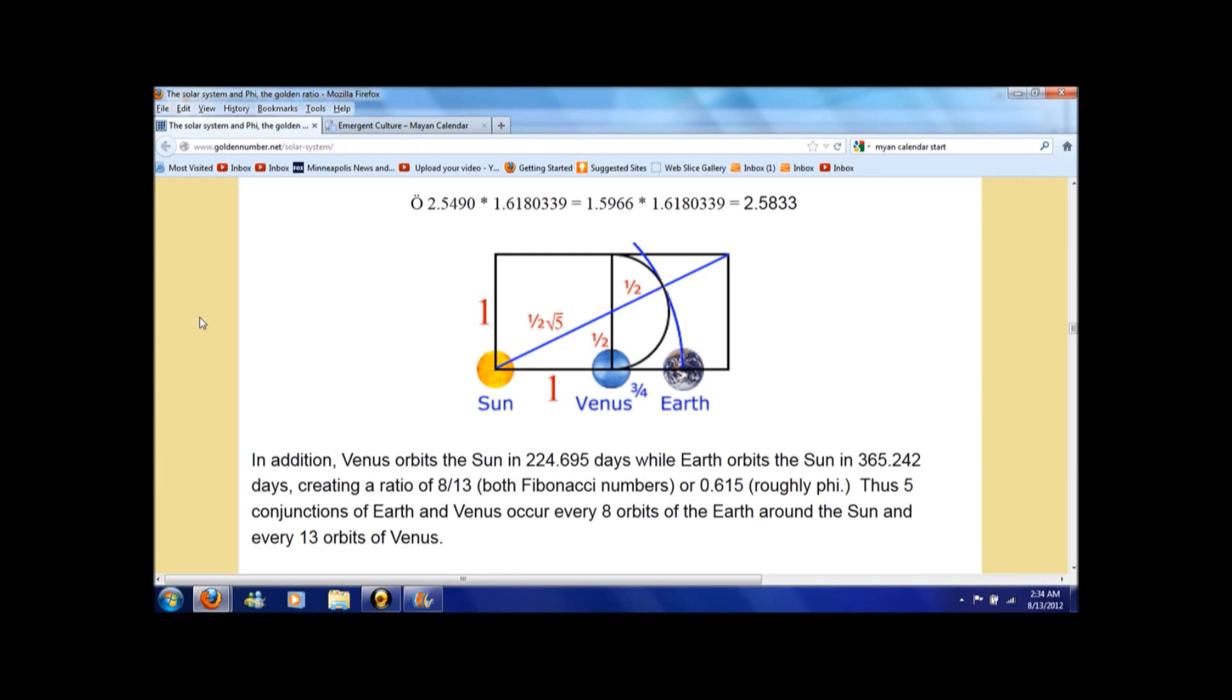Now, Venus orbits the sun in 224 and a fraction days while Earth orbits the sun in 365 and a fraction days, creating a ratio of 8 to 13. These are both Fibonacci numbers in sequence and this ratio comes out to roughly phi.